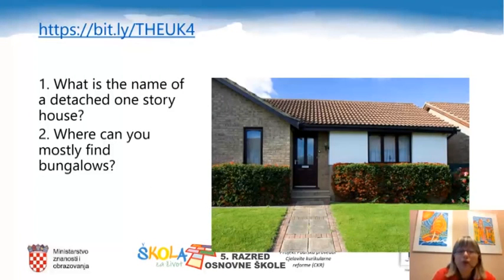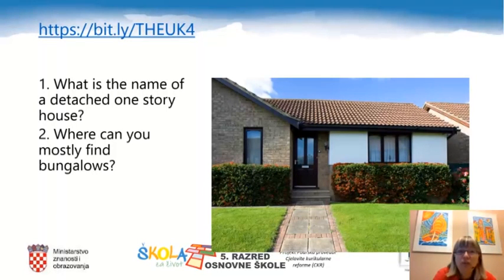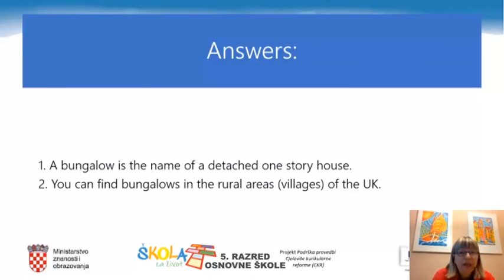We have come to the fourth video clip. Before watching it, let's have a look at the questions: What is the name of a detached one-storey house? Where can you mostly find bungalows? Please copy the link bit.ly/the-UK4 into your browser. A bungalow is the name of a detached one-storey house. You can find bungalows in the rural areas — which means villages — of the UK.